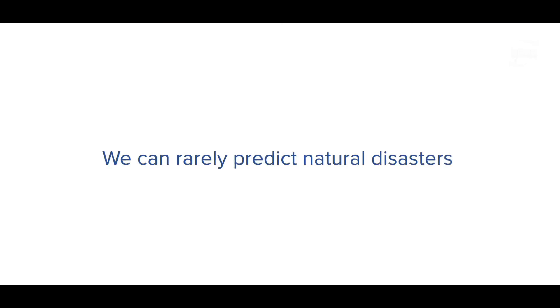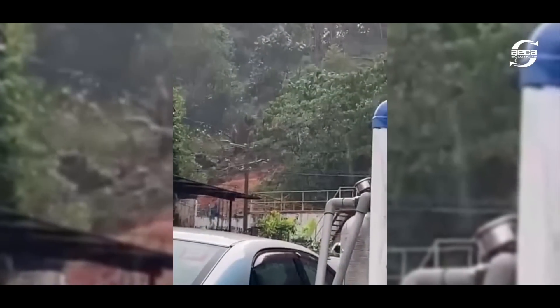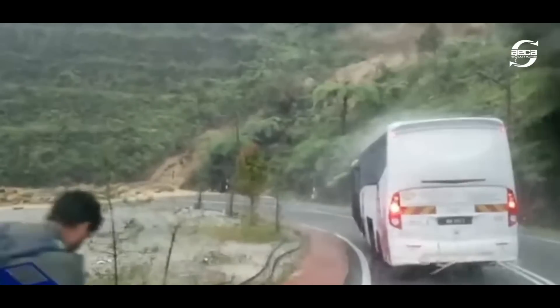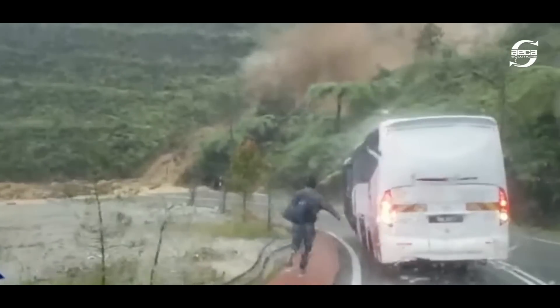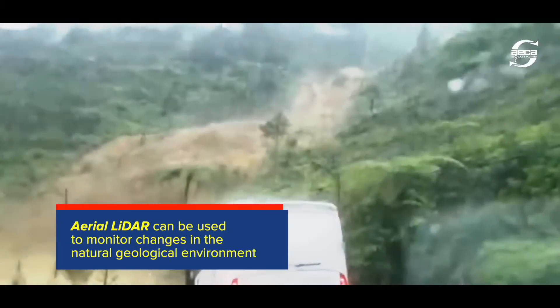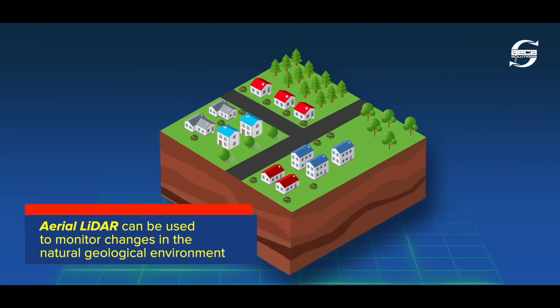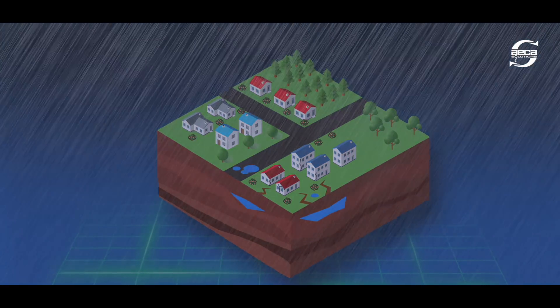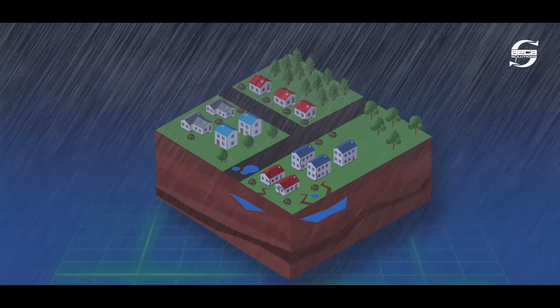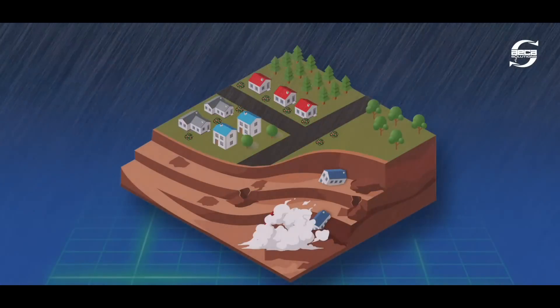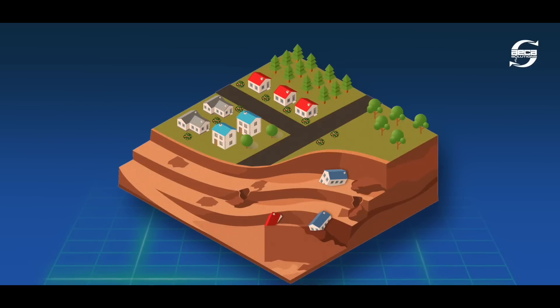Natural disasters are rarely predictable, but their devastating effects can be minimized through mitigation and management. Changes in the natural geological environment as a result of severe weather can be monitored using aerial lidar. Precautions can be taken when signs of movement or deterioration are detected. However, when natural disasters occur without warning, responses can be swift with proper disaster recovery planning and management.